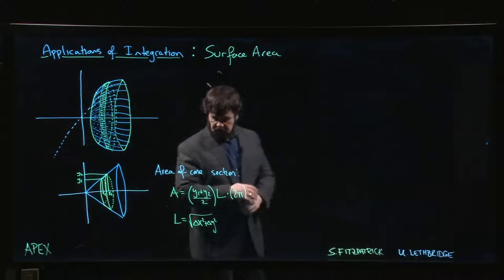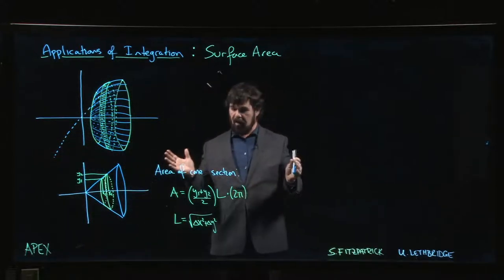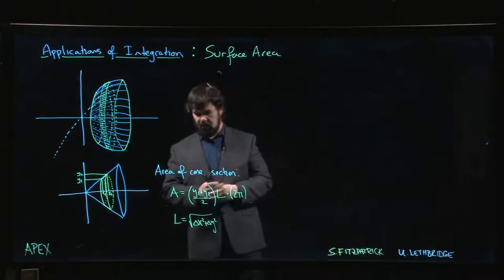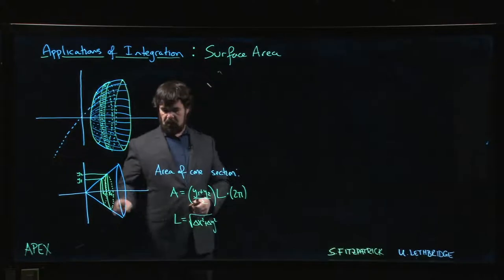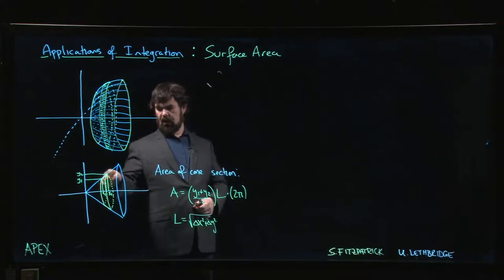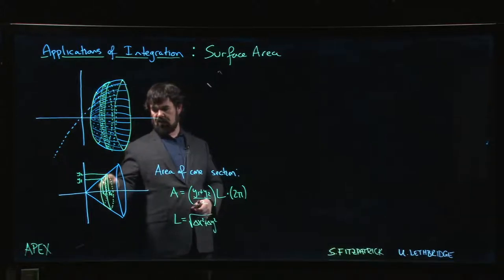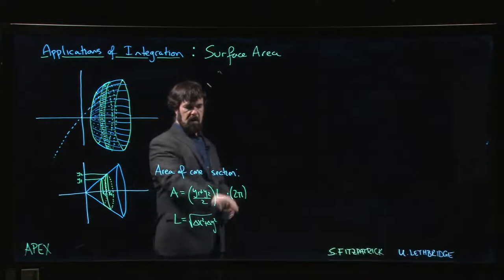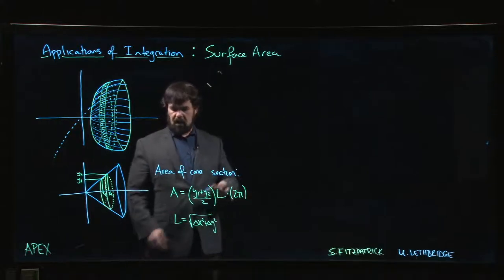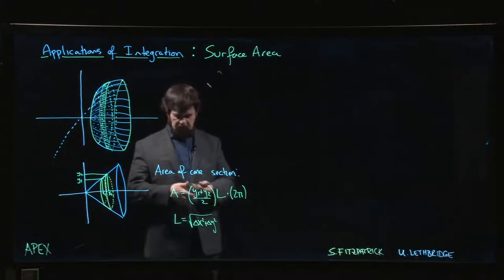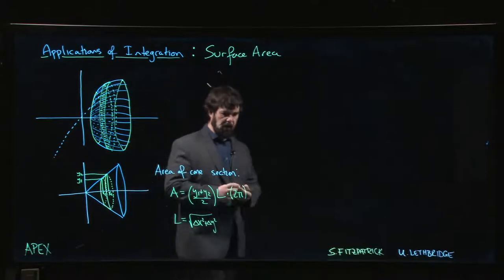So there's a formula that you can determine for that, which you can arrive at without using any sort of calculus, for the surface area of this little piece. You take the length of the little piece here that you're cutting, you multiply by essentially the average of the radius here and the radius there, and 2π, and that gives you the area of this piece.